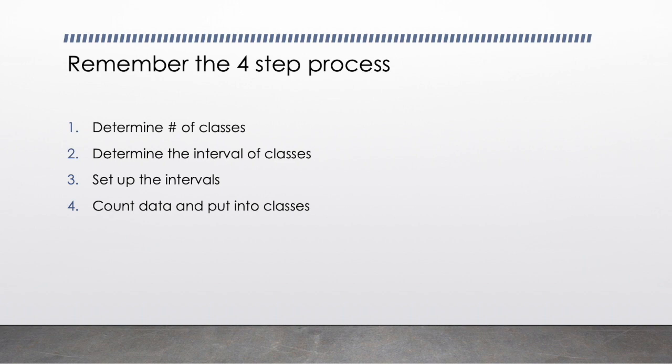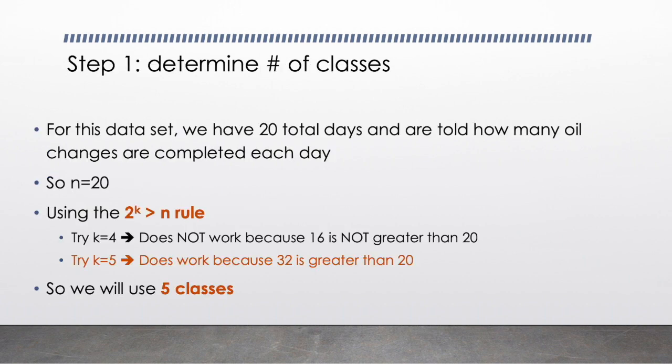So the first step is to determine the number of classes. For this data set we have a total of 20 days of data and we're told how many oil changes are completed each day. So our n here is 20 because that's the total number of observations in our data set. We're going to use the rule 2 to the kth power is greater than n, again n being 20 here for our data set.